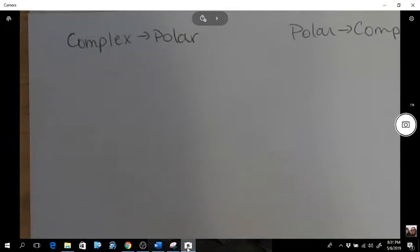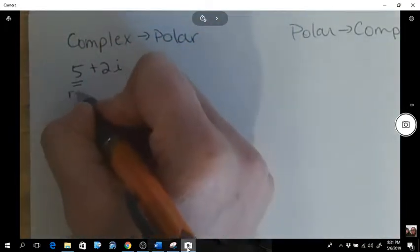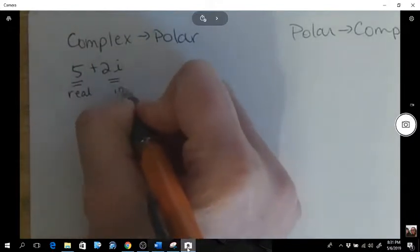So I'm going to give you an example in complex: 5 plus 2i. So this is the real part and this is the imaginary part.